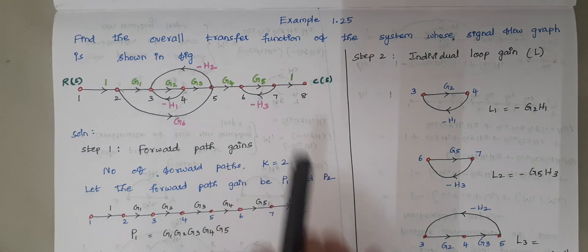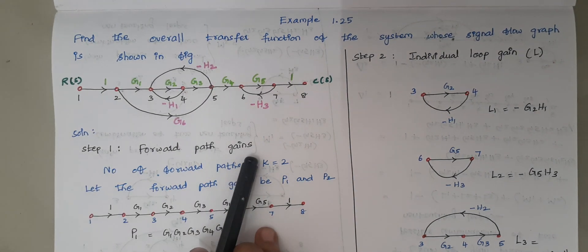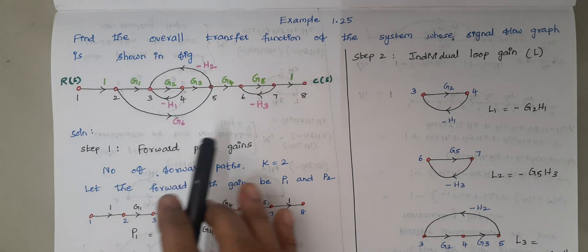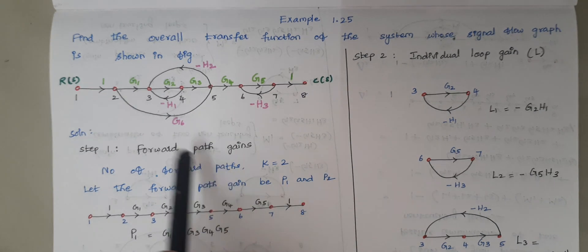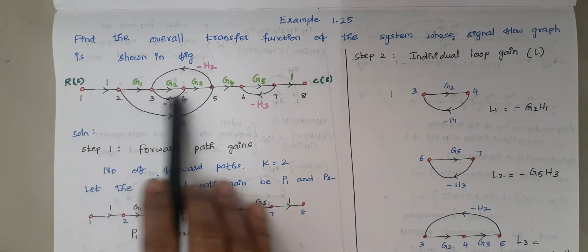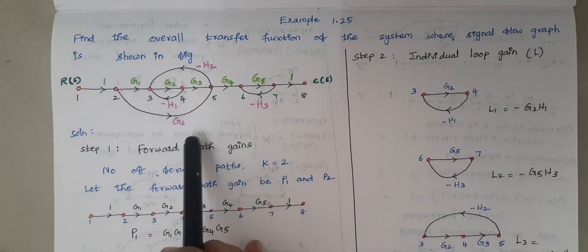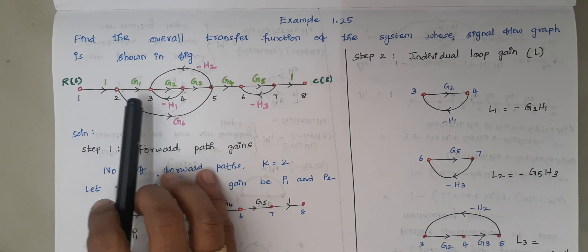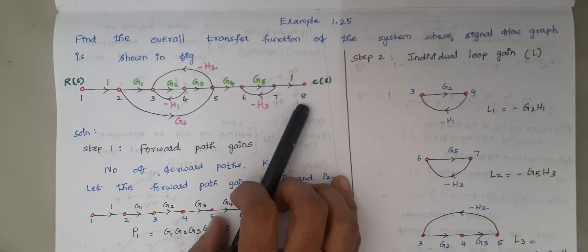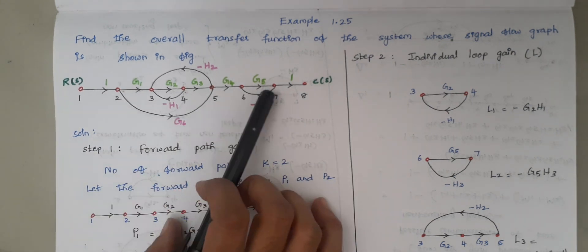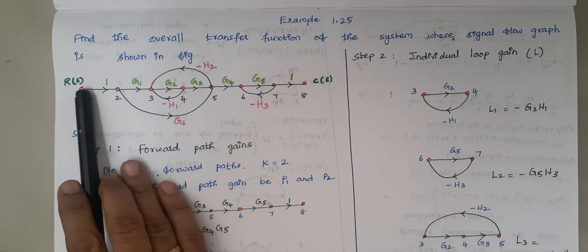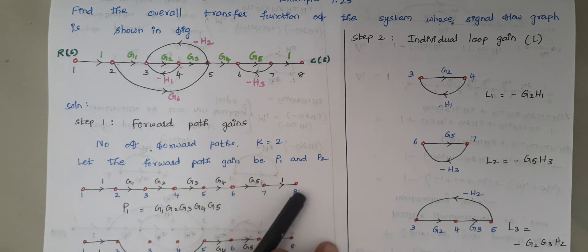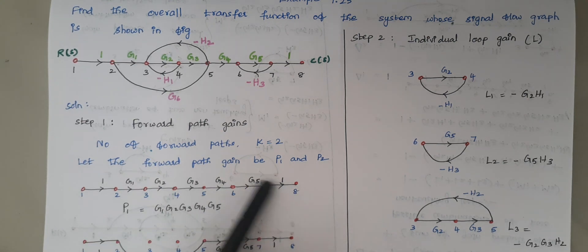The first step in calculating the transfer function is forward path gain. A forward path starts at one node, ends at another node, and all arrow heads in that path are always directed forward. In this problem, a path starts from node 1, travels through nodes 2, 3, 4, 5, 6, 7, and finally reaches node 8. Every arrow head is moving forward — this is the first forward path, going from node 1 to node 8 through all intermediate nodes.